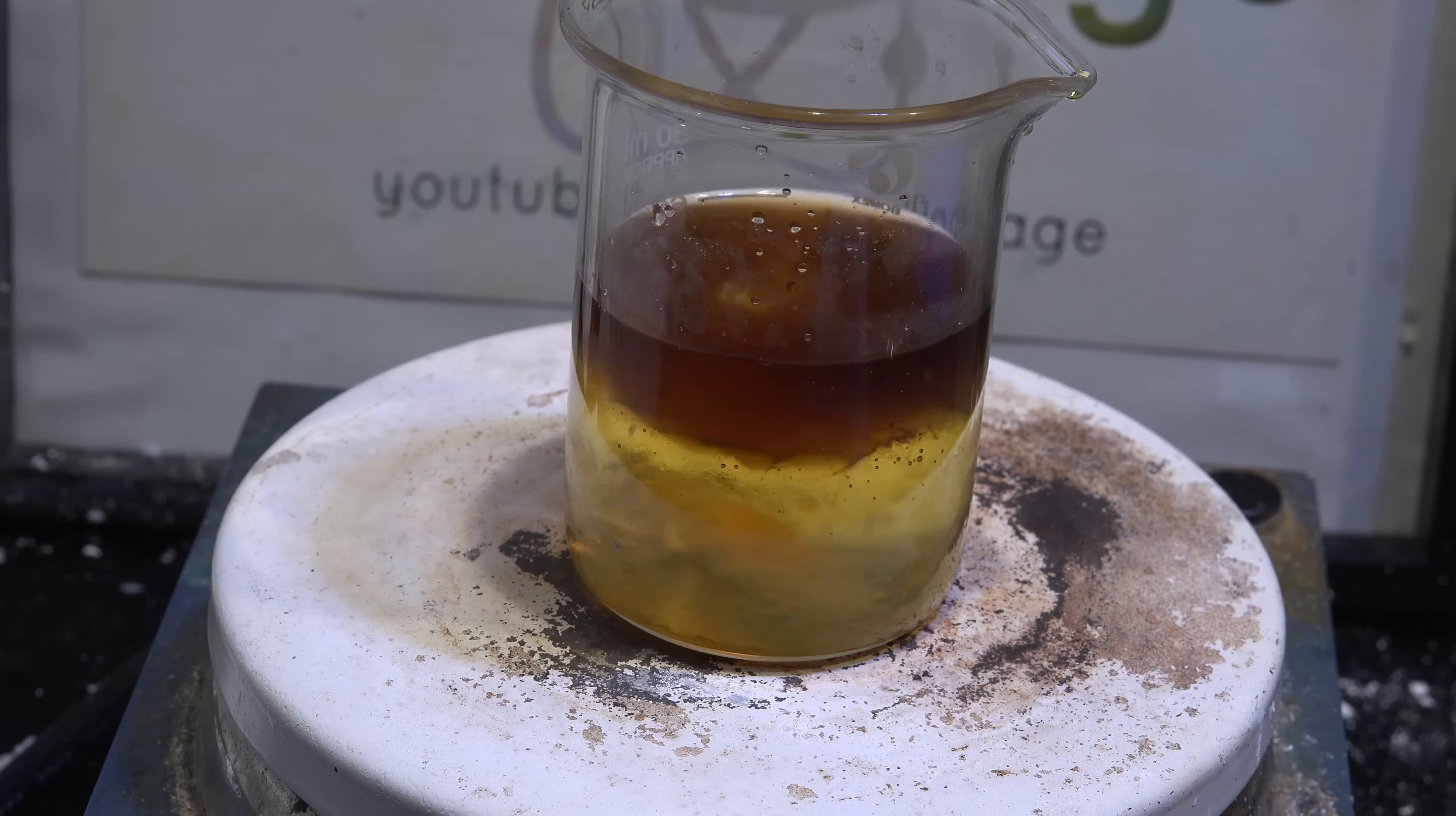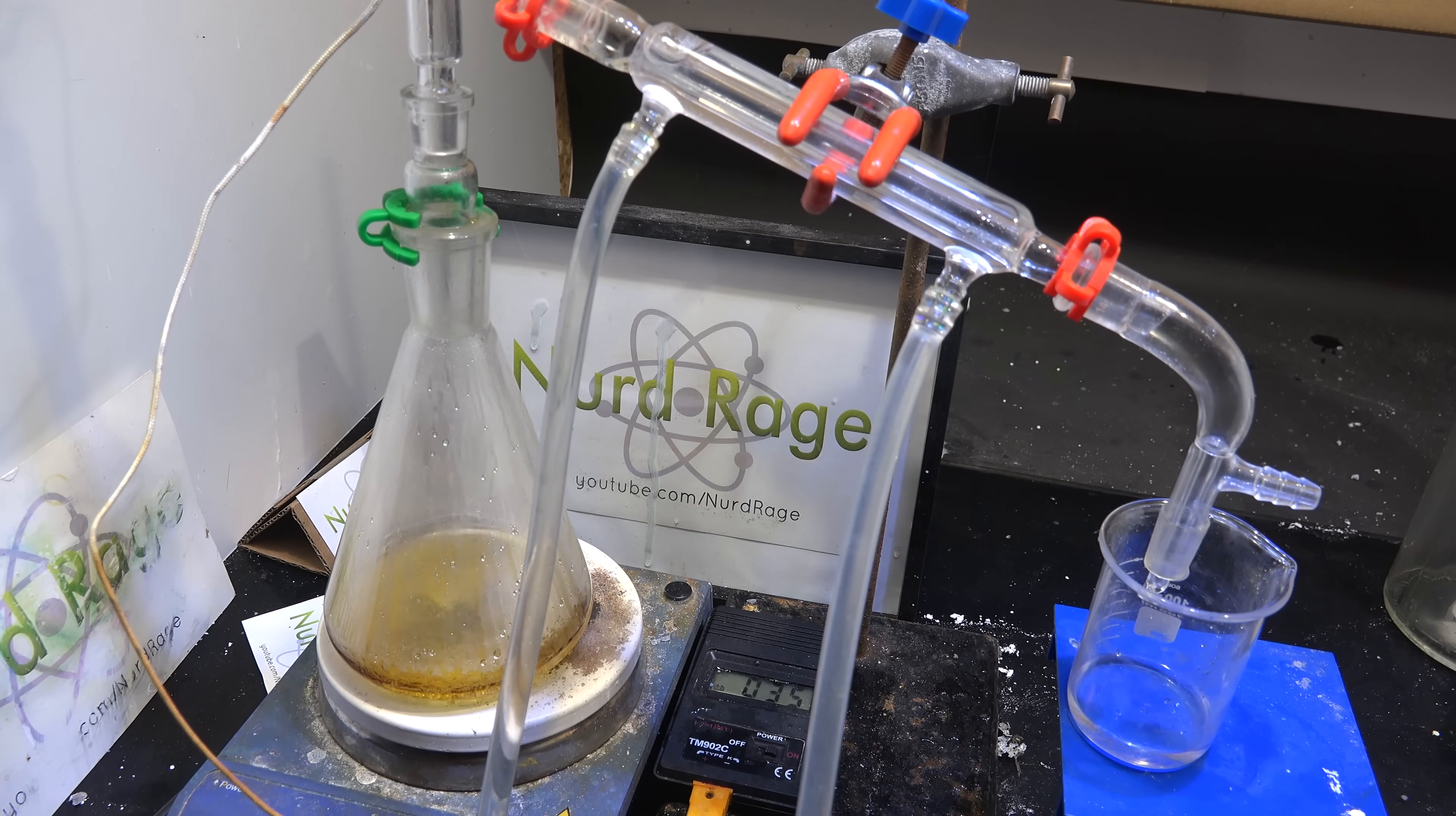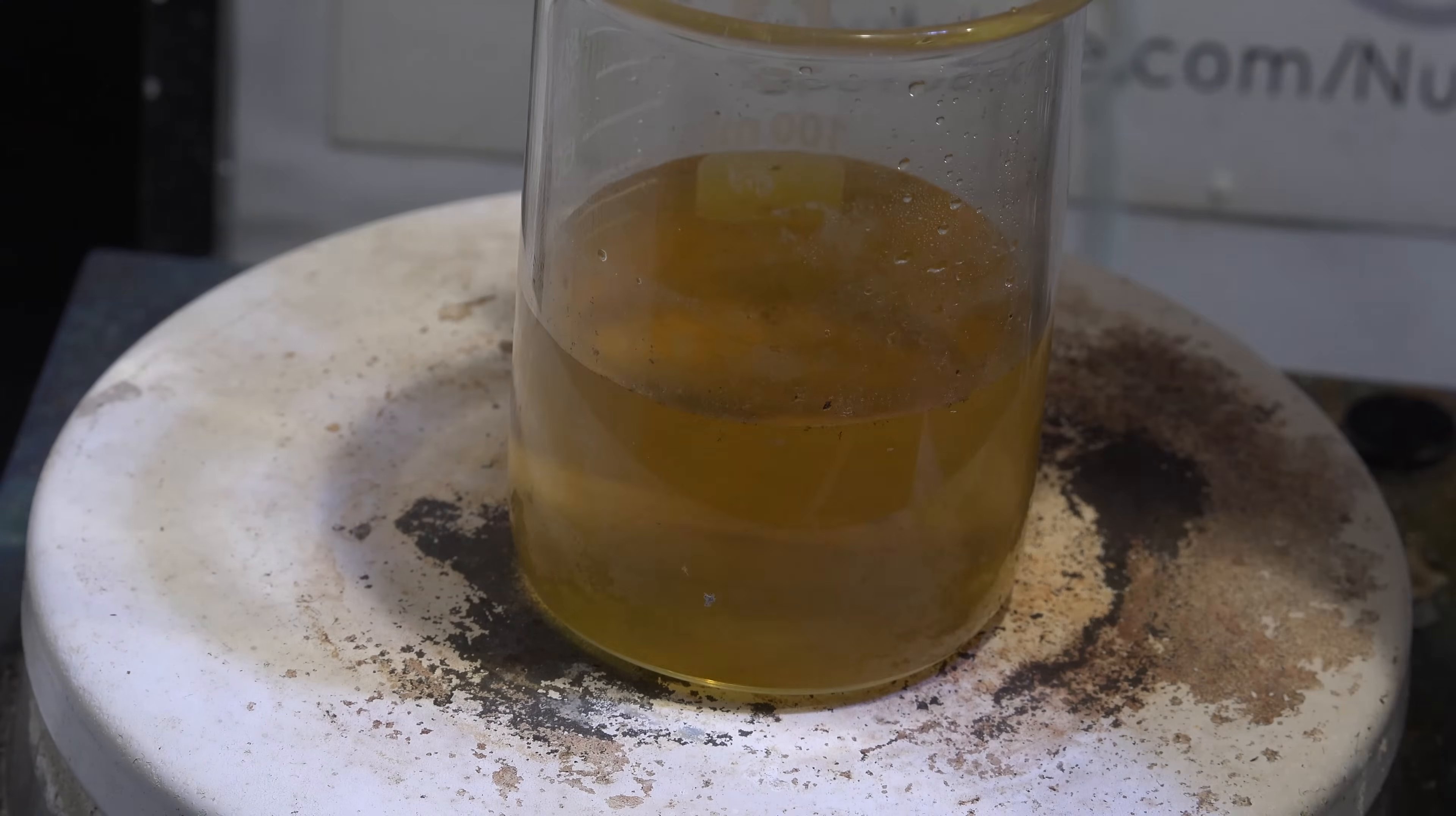The separation of layers shows that the ether hasn't fully distilled off. Just put it back into distillation and distill off the ether until water starts distilling. The ether now distills off easily because the gallium chloride can bind with water instead of ether. Now at this point we have a solution of gallium chloride and water.